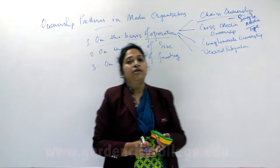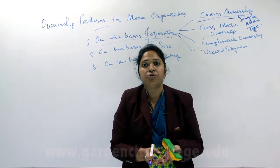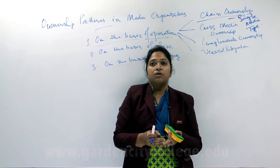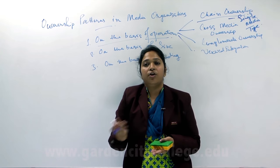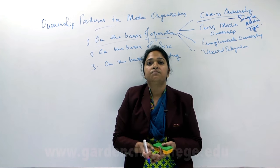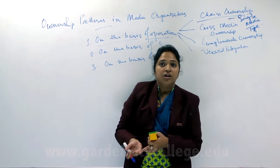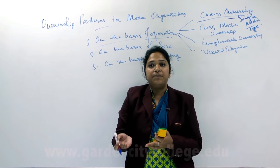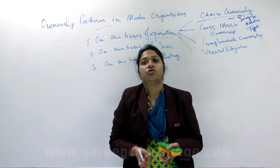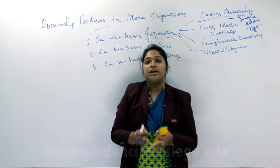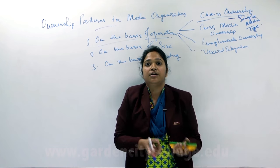Followed by this is what we term as cross-media ownership. In terms of cross-media ownership, a particular owner does not restrain or limit himself to owning only one single media type; rather, he or she would like to involve themselves in various kinds of media types. So someone having a newspaper can go and purchase a television station and at the same time purchase a radio station as well — they will have a stake in multiple kinds of media types. That is what is meant by cross-media ownership.